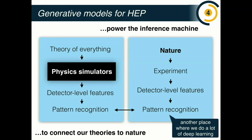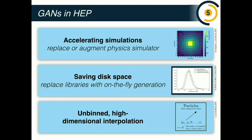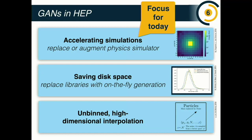The generative models connect our theory with the data. I'll briefly mention that pattern recognition is where we do a lot of machine learning, but today I'm going to talk about the physics simulators. GANs are really powerful generative models, and I'll focus on one application: accelerating simulations. We have a simulator which is very powerful but very slow, and the idea is we can use GANs as a surrogate model for very fast generation. GANs may also replace large libraries of synthetic data with an on-the-fly generator, and they're also very good for high-dimensional interpolation in scientific data.